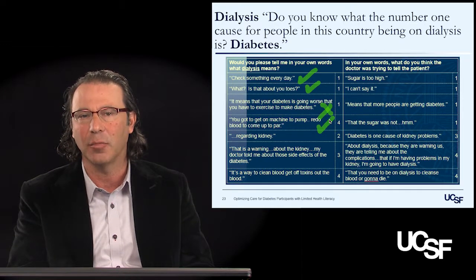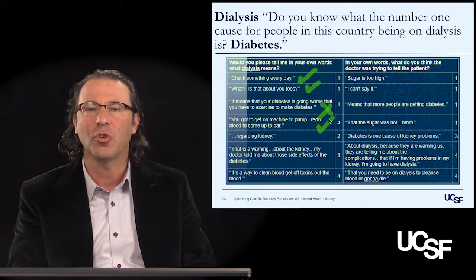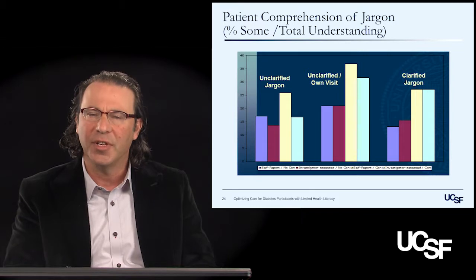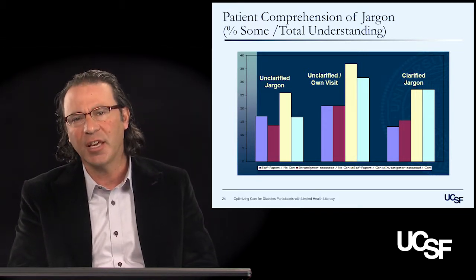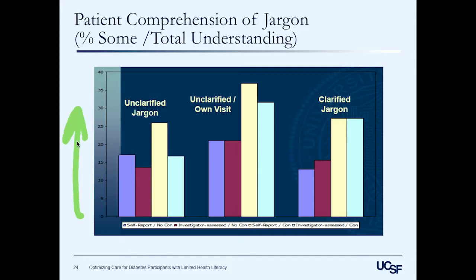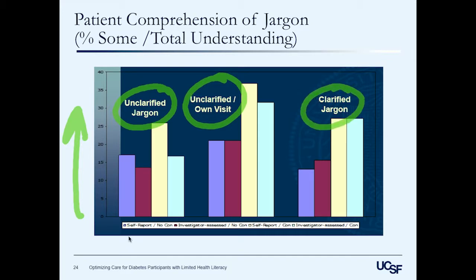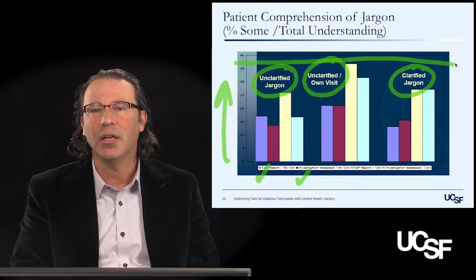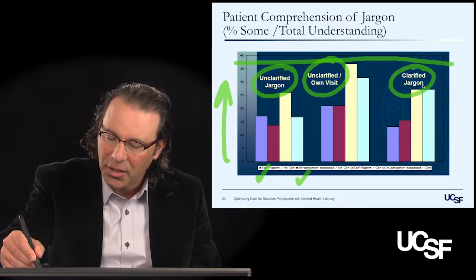You can understand why dialysis might not be understood by patients with diabetes unless they happened to have seen a television show about it or if their auntie was on dialysis. We examined whether the kind of jargon and the setting in which it was presented was associated with better understanding. On the y-axis is the proportion of patients scoring three or four — some or total understanding — for unclarified jargon, unclarified jargon from the patient's own visit, or clarified jargon. The bottom line: in no circumstance did patient understanding ever exceed 40%, even when the clinician clarified the term.